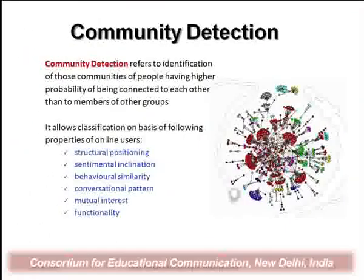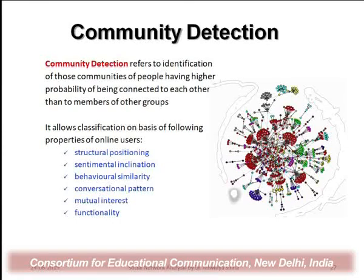Community detection refers to identifying people with a high probability of being connected based on content sharing or hobbies. It allows classification of online users based on structural positioning, sentimental inclination, behavioral similarity — what type of reply, comment, or engagement they provide for a particular trend — and conversational patterns. Those showing similar patterns can be grouped together based on mutual interest and the type of functionality they offer to the media.